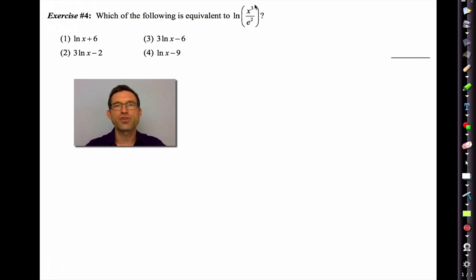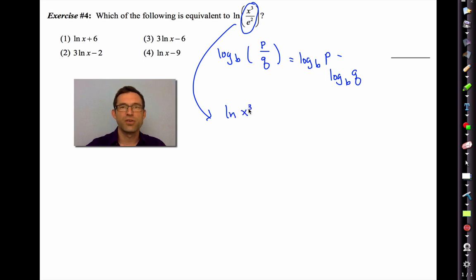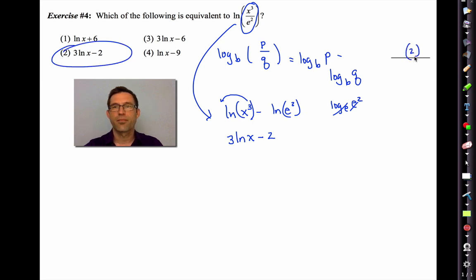All right. Let's go through it. Well, the big structure inside of the logarithm is a quotient. And remember, we have this property. If I had the log base b of p divided by q, that would be the log base b of p minus the log of q. Therefore, this thing will be the natural log of x cubed minus the natural log of e squared. But we also had that property that said we could bring these exponents out. So that would be 3 times the natural log of x minus, and what would this be? That's the log base e of e squared. That would just be 2. So 3 ln of x minus 2.